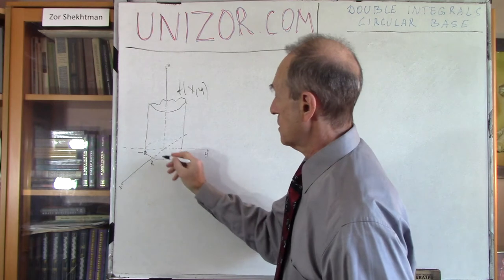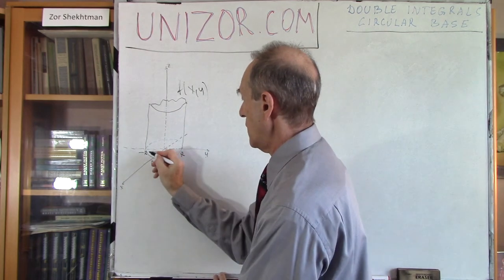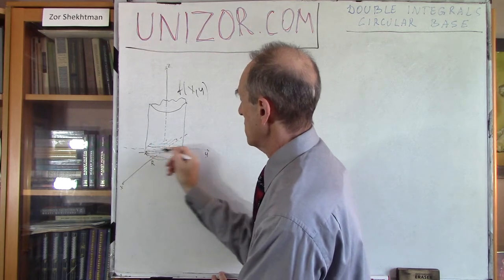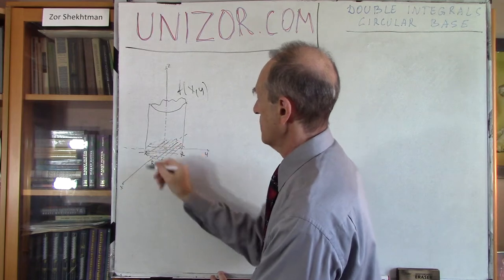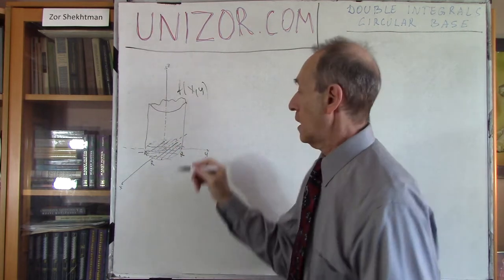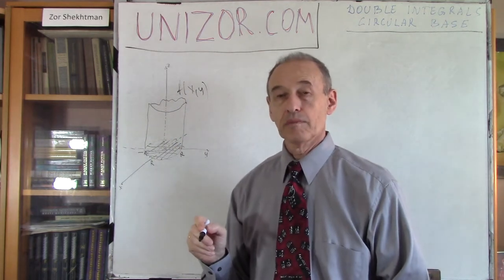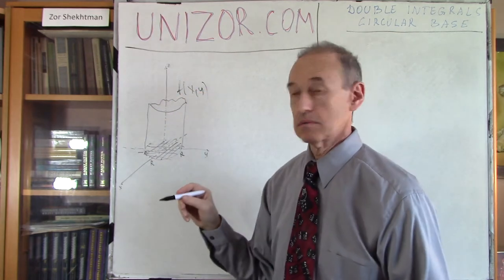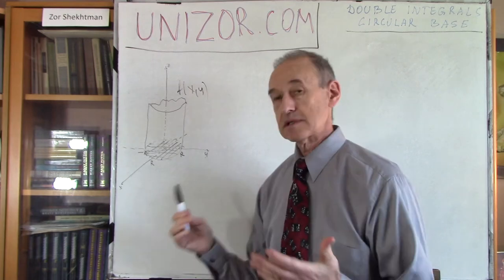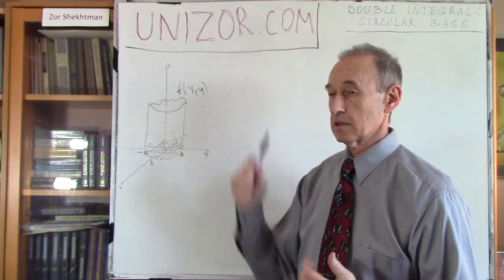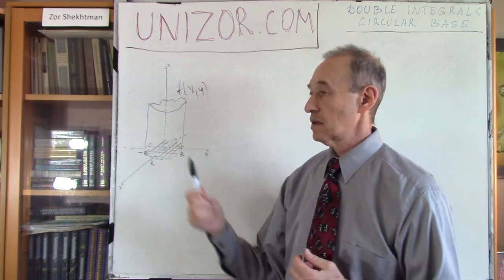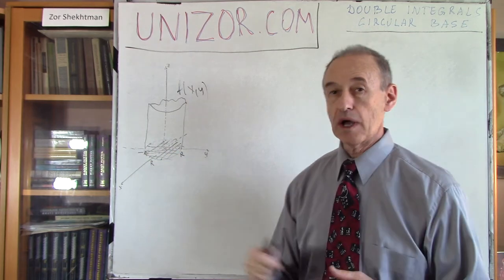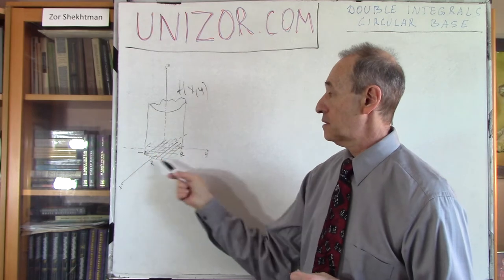In this case, small pieces would be something like this. These lines represent division by x, and these lines represent division by y. On each little rectangle, I will build a rectangular parallel pipette which will go all the way up to the surface.